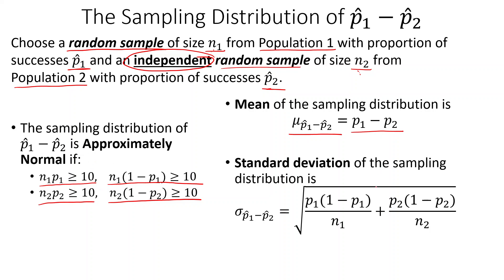For the standard deviation, usually we just have the first part — that's the standard deviation for just P1. But since we have two of them, we just add them together under the square root. It's part of our combining distribution rules, like our Pythagorean theorem — that's how it works out.